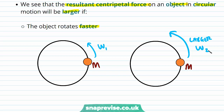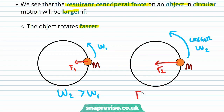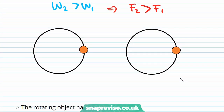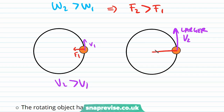If it rotates faster and omega 2 is greater than omega 1, then the centripetal force F2 is going to be greater than F1. So one way of expressing that an object rotates faster is by increasing its angular velocity, but we can also increase its linear velocity. If V2 is greater than V1, then F2 is going to be greater than F1.